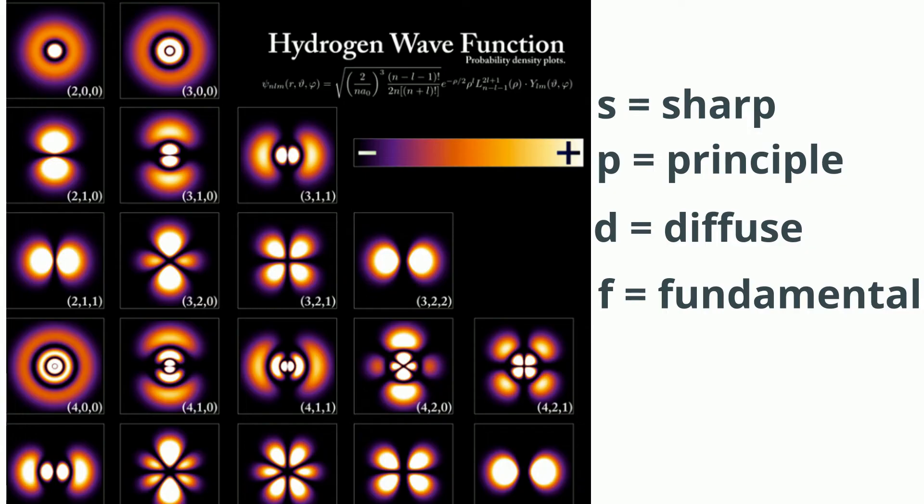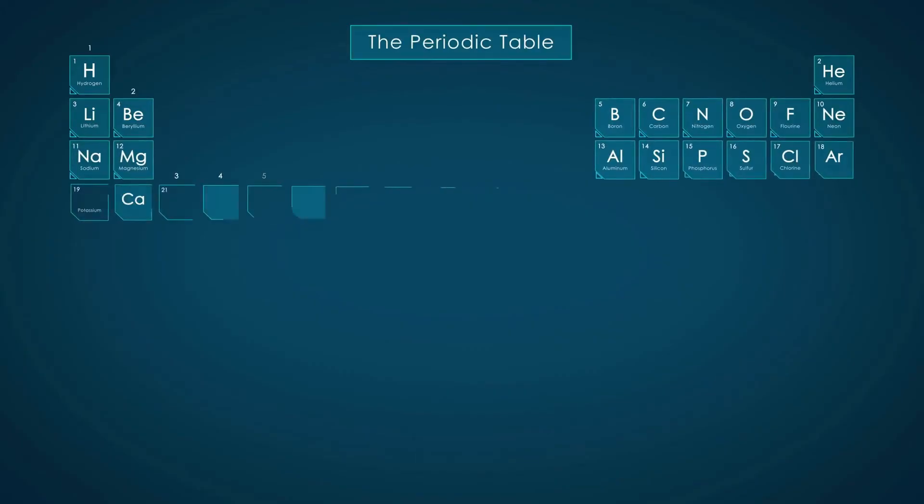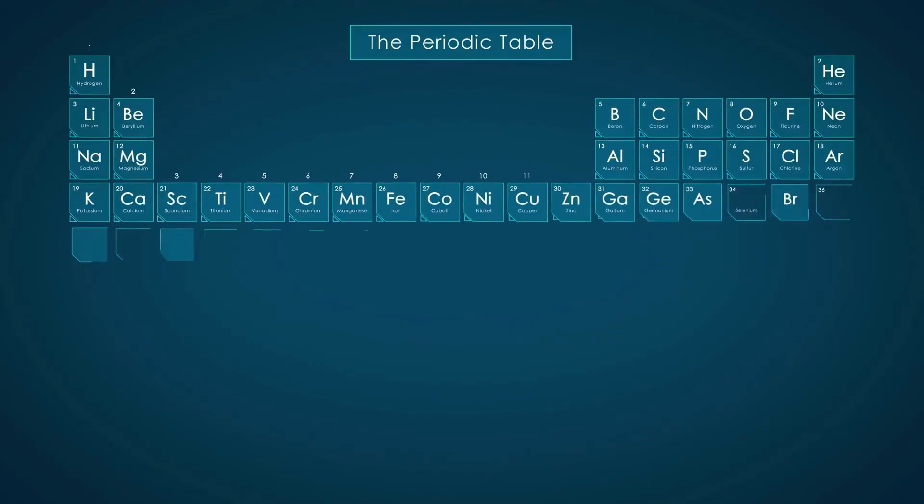No G block elements have been observed to date, but the letter was chosen because it is next in the alphabetical order after F. Because elements in the different blocks have valence electrons in similar orbitals, they share common properties.